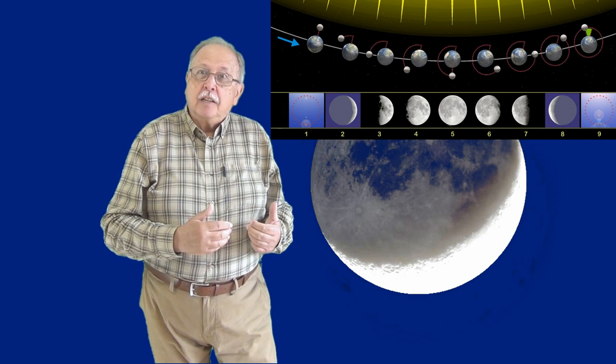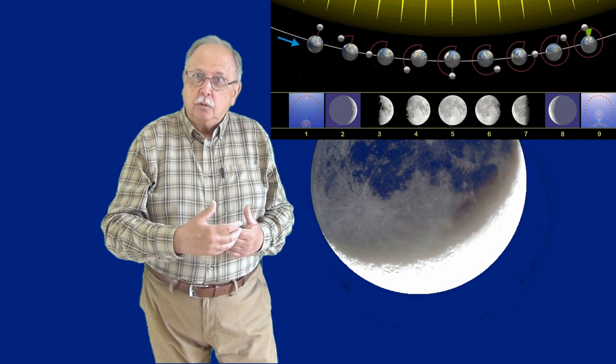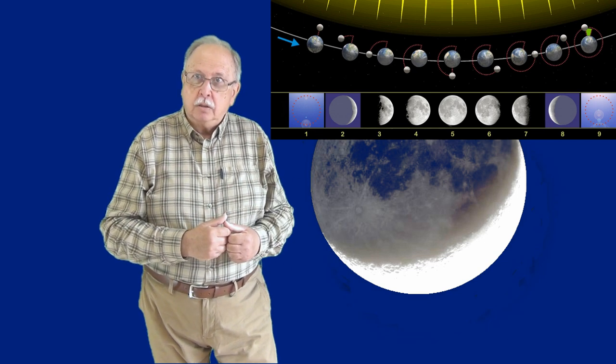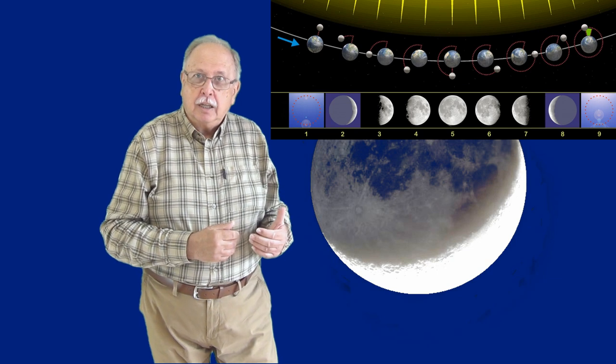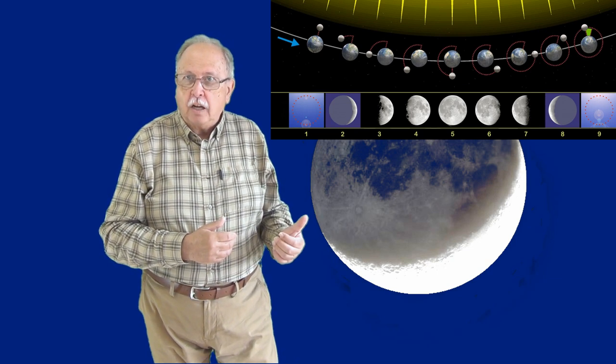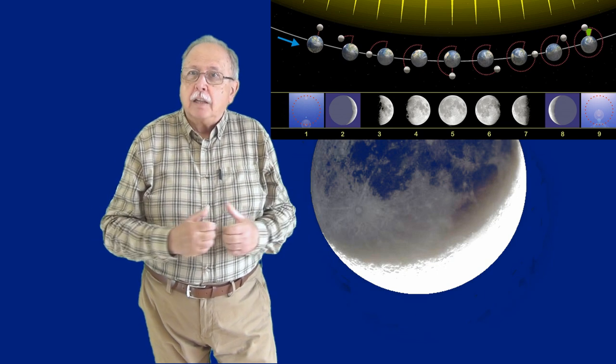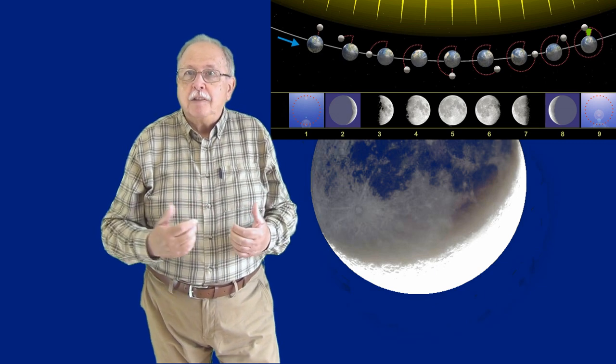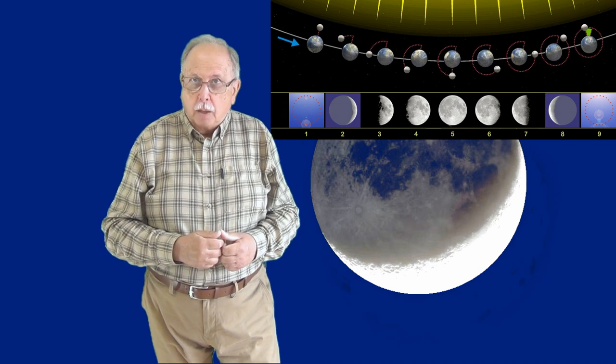De aceea când luna este cu puțin după faza de lună nouă, poziția 2, precum și când este cu puțin înainte de lună nouă, poziția 8, partea pământului care se vede de pe lună este în mare parte luminată de soare. Și luna primește multă lumină reflectată de pământ, ceea ce face vizibilă de pe pământ partea lunii pe care e noapte.